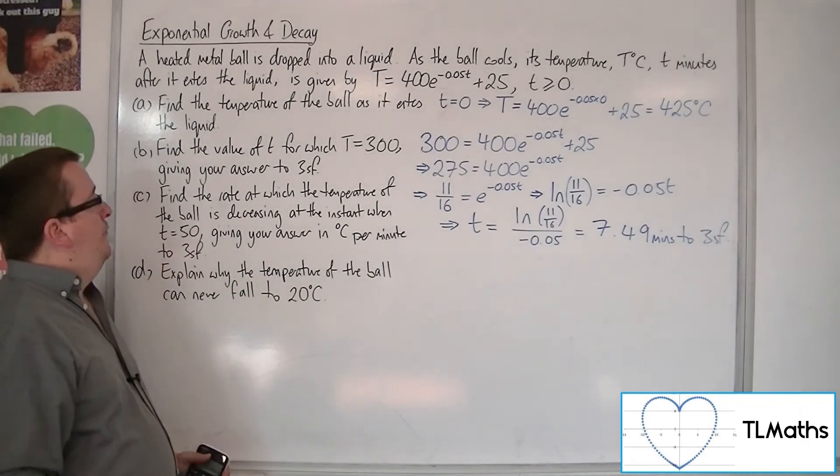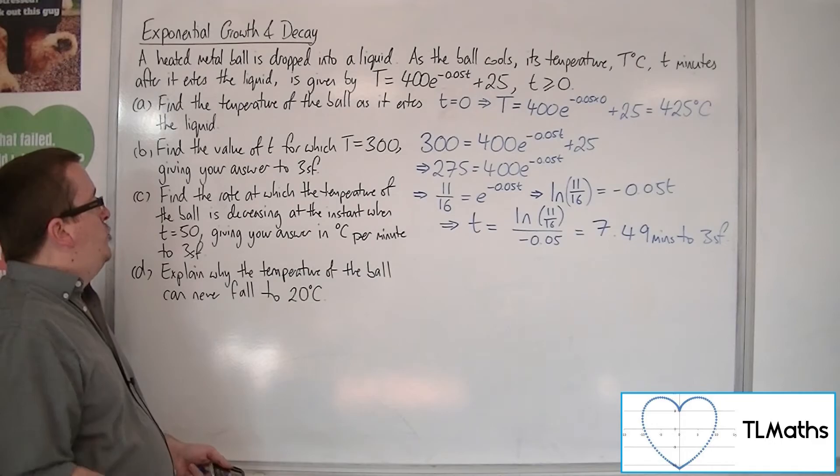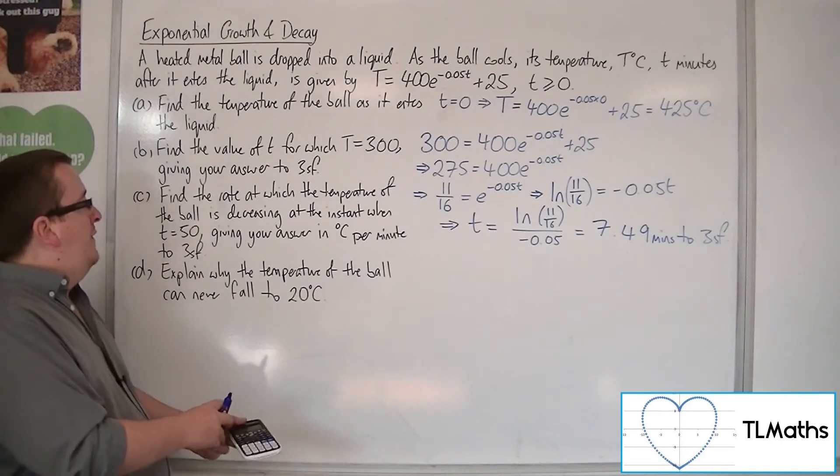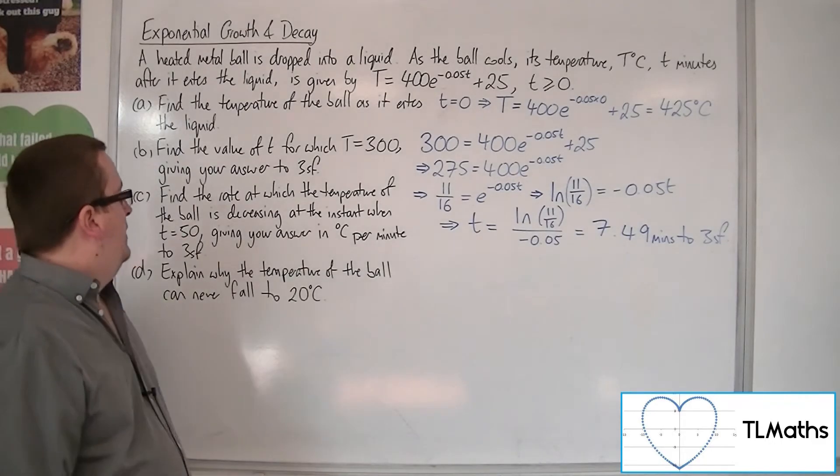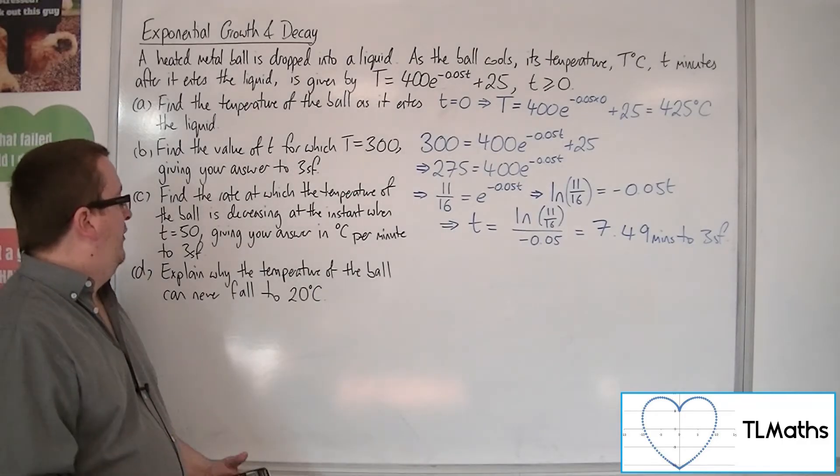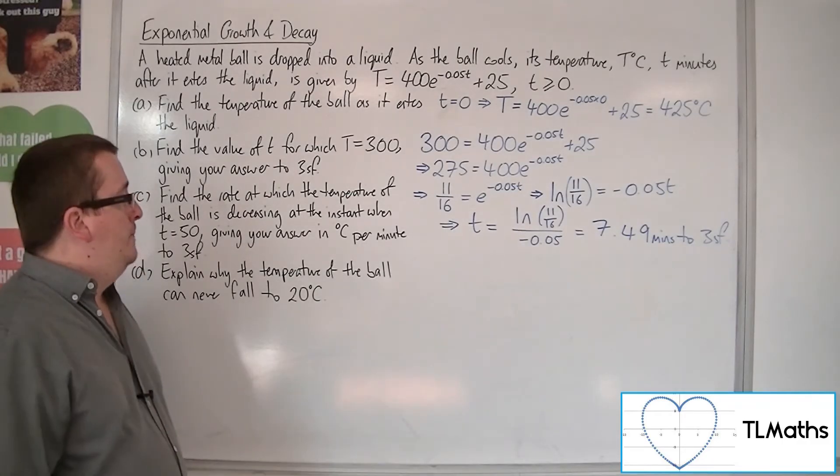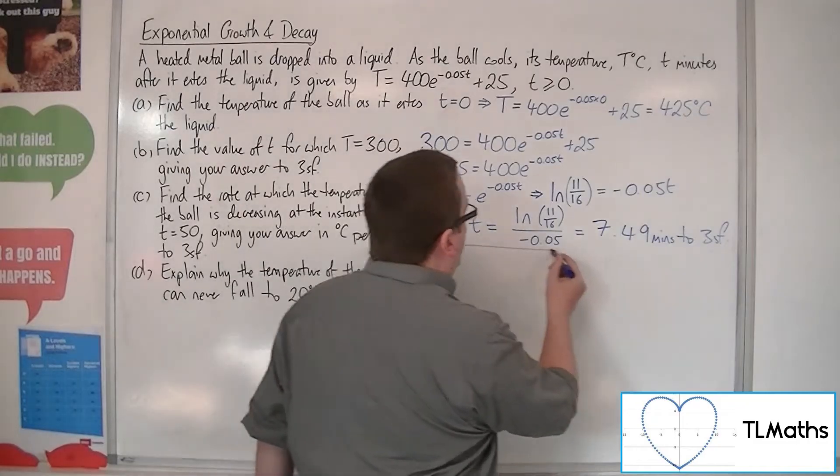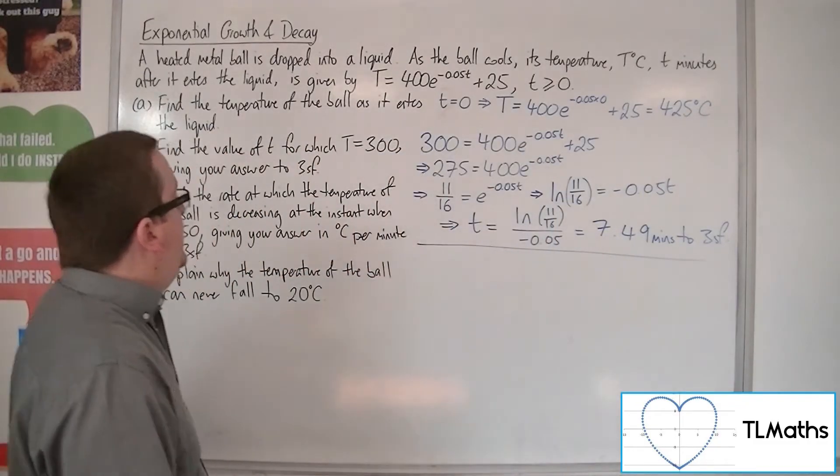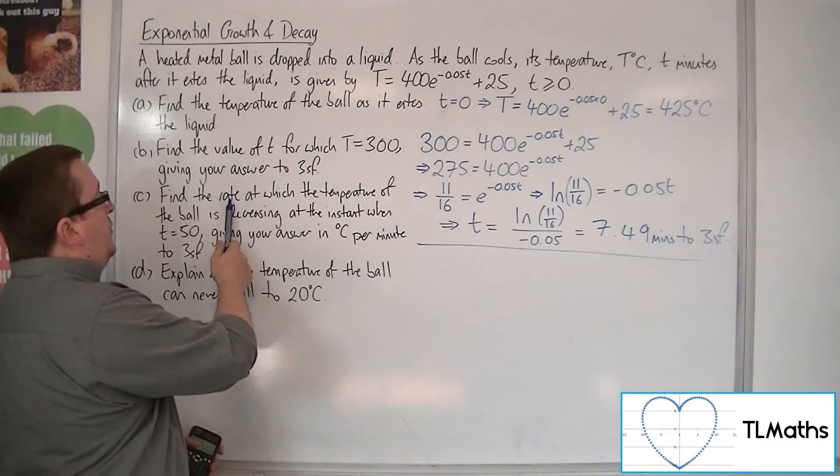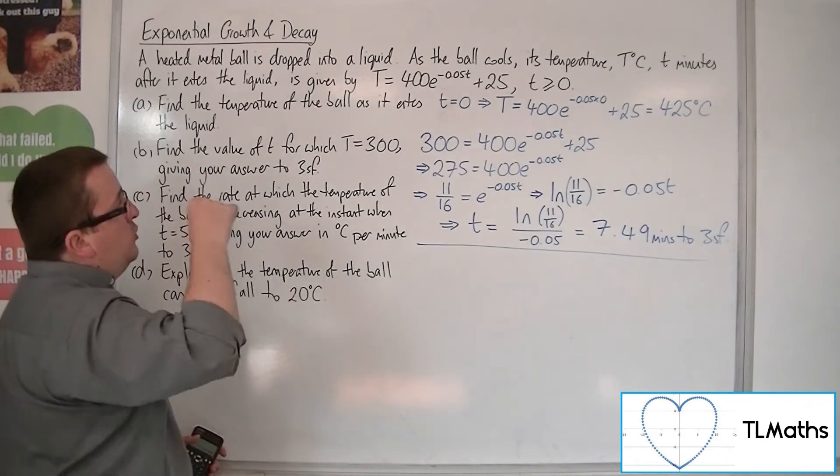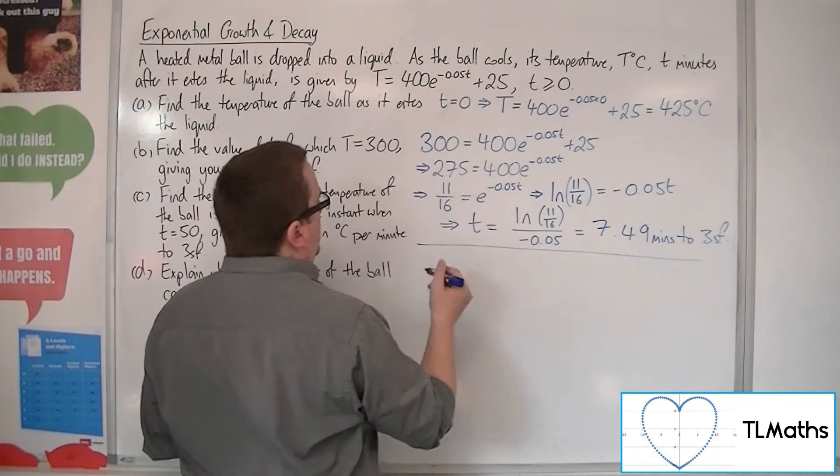Part C, find the rate at which the temperature of the ball is decreasing at the instant when time is 50, giving your answer in degrees Celsius per minute to 3 sig fig. So, what we want to do is we want to find the gradient function, because that's the rate at which the temperature of the ball is decreasing.